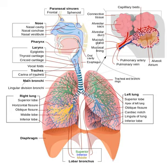The lung vessels contain a fibrinolytic system that dissolves clots that may have arrived in the pulmonary circulation by embolism, often from the deep veins in the legs. They also release a variety of substances that enter the systemic arterial blood, and they remove other substances from the systemic venous blood that reach them via the pulmonary artery. Some prostaglandins are removed from the circulation, while others are synthesized in the lungs and released into the blood when lung tissue is stretched. The lungs activate one hormone. The physiologically inactive decapeptide angiotensin I is converted to the aldosterone-releasing octapeptide, angiotensin II, in the pulmonary circulation. Angiotensin II also has a direct effect on arteriolar walls, causing arteriolar vasoconstriction, and consequently a rise in arterial blood pressure.